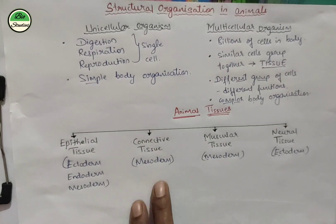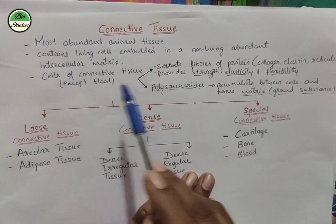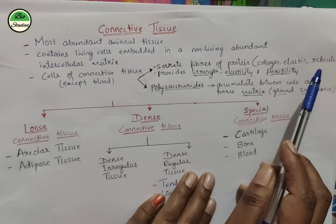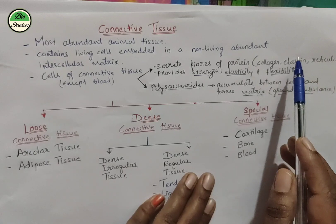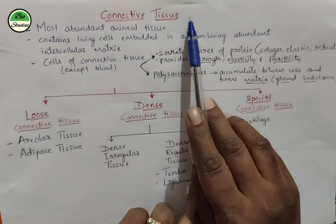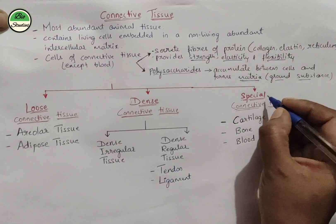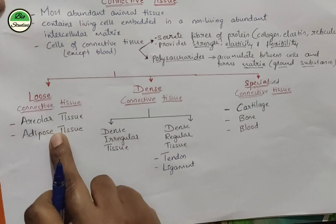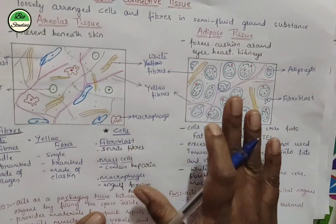I hope you remember from the connective tissue introduction that there are three types of fibers: white fibers (collagen), yellow fibers (elastin protein), and reticular fibers. In connective tissue, we have three types: loose connective, dense connective, and specialized connective tissue. In loose connective tissue, we studied areolar tissue — a packing tissue — and adipose tissue — a fat tissue. This diagram is easy to reproduce in an exam.